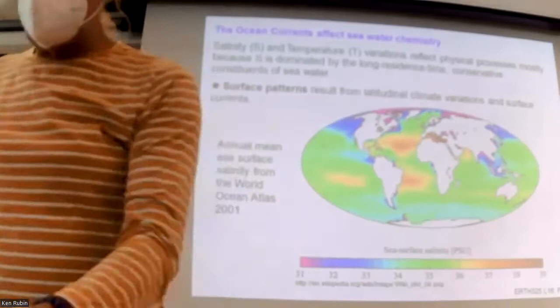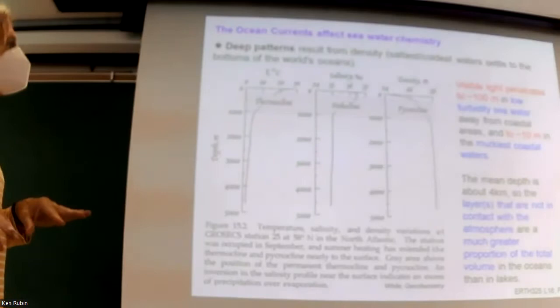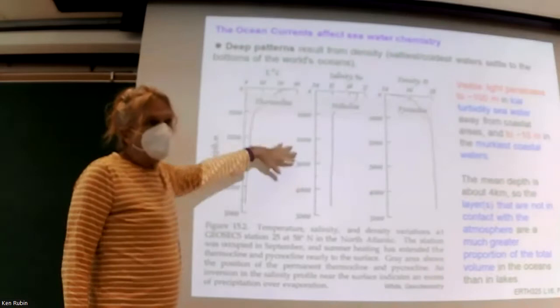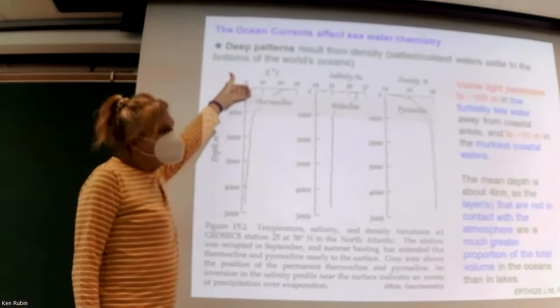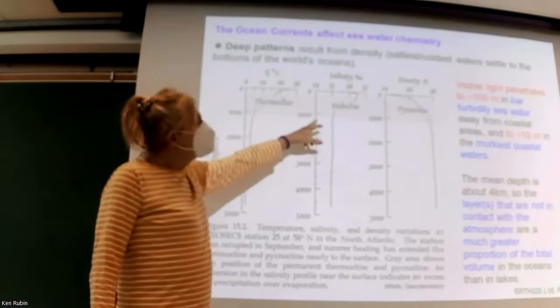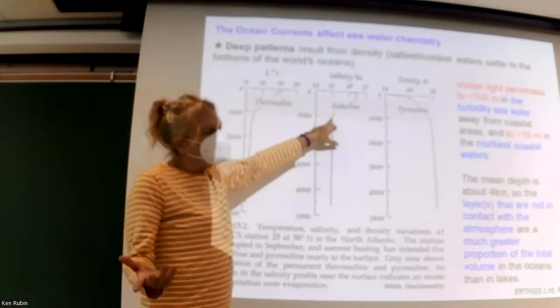The oceans are stratified — hot at the top, cold at the bottom. As we go from the photic zone through the mixed layer into the deep water, we have a drop in temperatures called the thermocline. There's a corresponding variation in salt content — the halocline — about one salinity unit difference. And there's a corresponding difference in density, which we call the pycnocline.